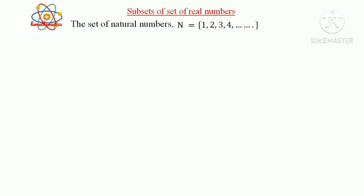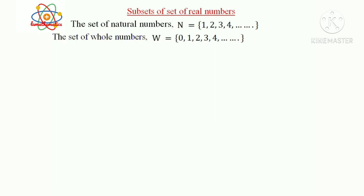Next, the set of natural numbers and 0, that is the set {0, 1, 2, 3, 4, ...}. The set is denoted by capital W and it is called whole numbers. That is the set of whole numbers W = {0, 1, 2, 3, 4, ...}.